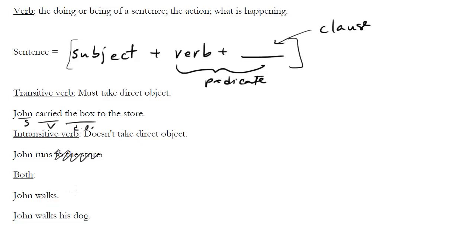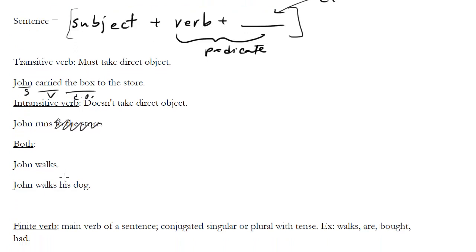Some however, can act as both. So for instance, John walks, that's fine. Or John walks his dog, okay, now we've got a different sense of the verb walks, and now it must take a direct object. Same thing with run, so you could have John runs, as in runs around the block, or John runs the company, so now taking a direct object.